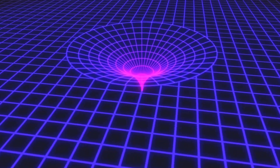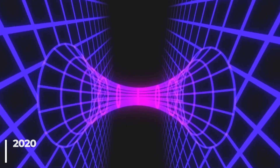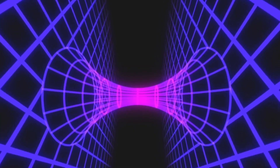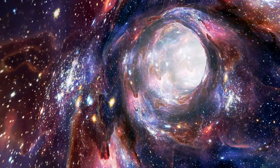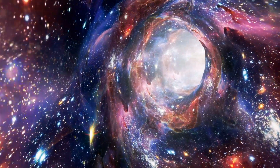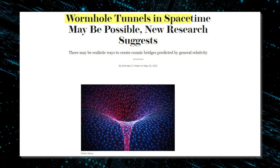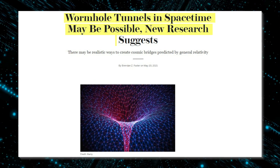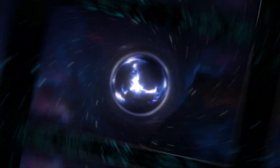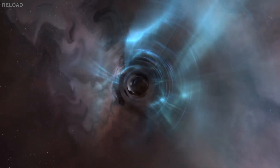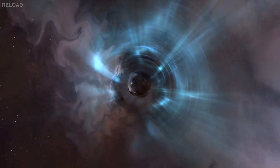Wormholes contain two openings with a hollow cylinder connecting the two, according to an article published in the Journal of High Energy Physics in 2020. The opening would most likely be spheroidal. The throat might be a straight stretch, but it could also wind around, taking a longer path than a more conventional route might require. Einstein's theory of general relativity mathematically predicts the existence of wormholes, but none have been discovered to date.